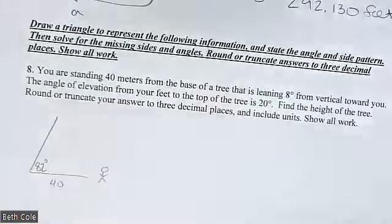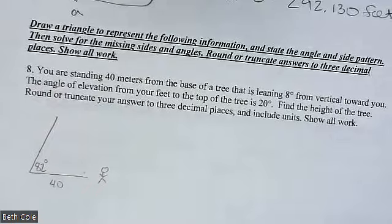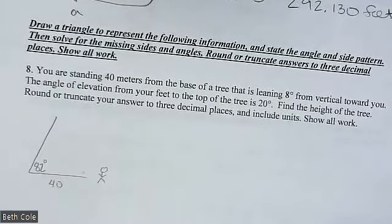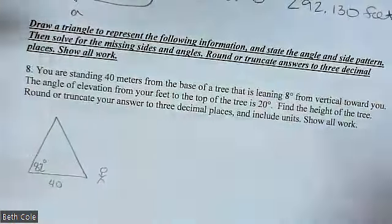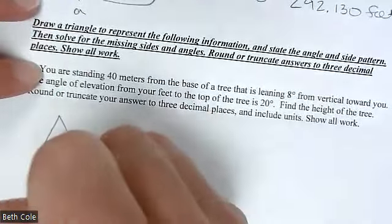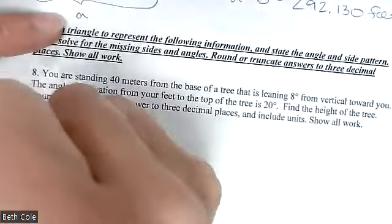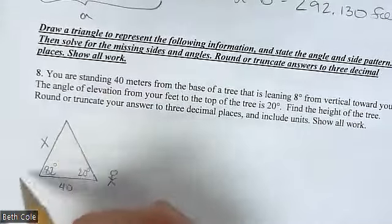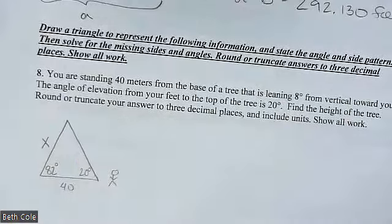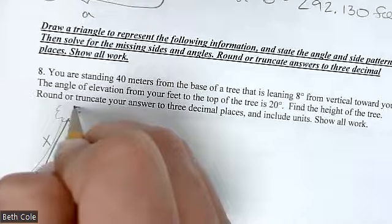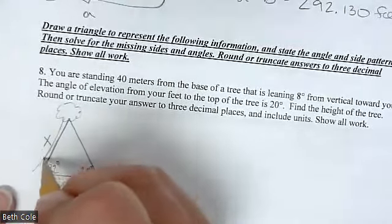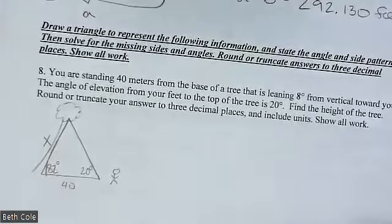82 degrees — that's the angle the tree makes. The angle of elevation from your feet to the top of the tree is 20 degrees, and you need to find the height. But you can't use SOH-CAH-TOA because it's not a right triangle. Instead, what pattern do we have? Angle, side, angle — the side is in between the two angles, so that means Law of Sines.